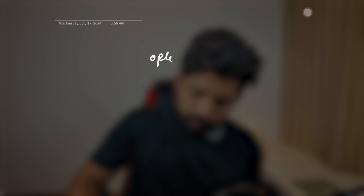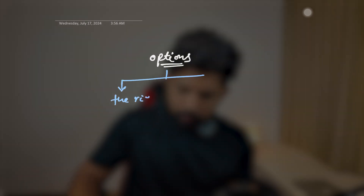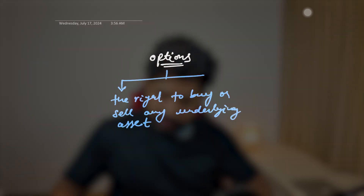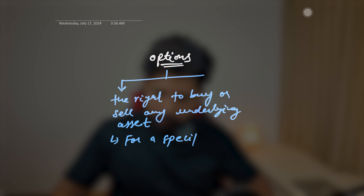So what are options? Options are financial derivatives which give the buyer an option — not the obligation — to buy or sell any underlying asset at a specific price for a certain period, or we can say on a specific date.